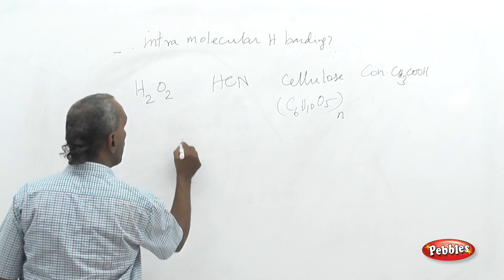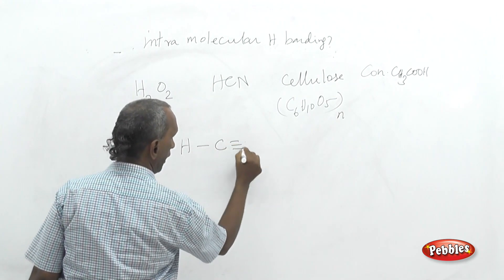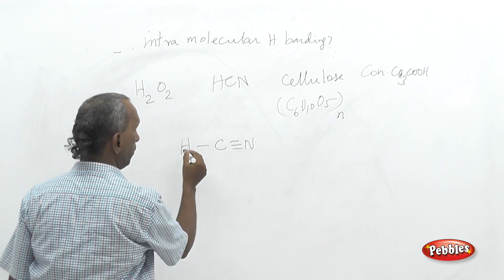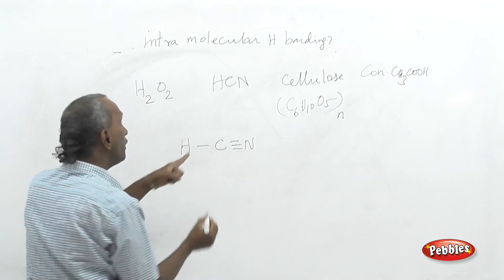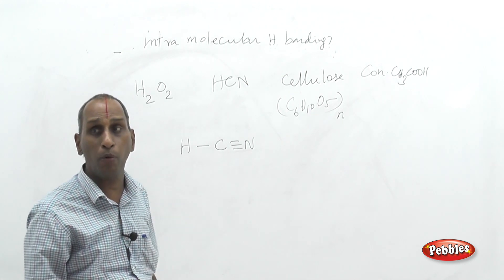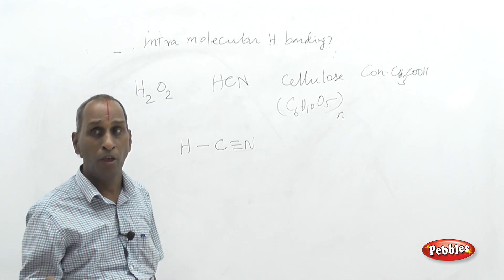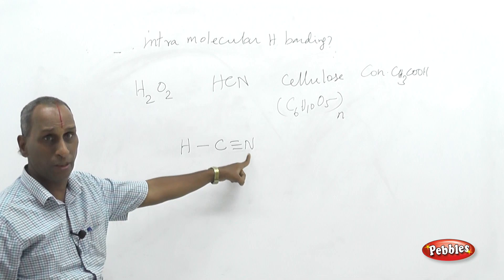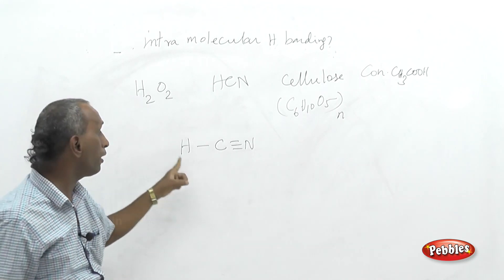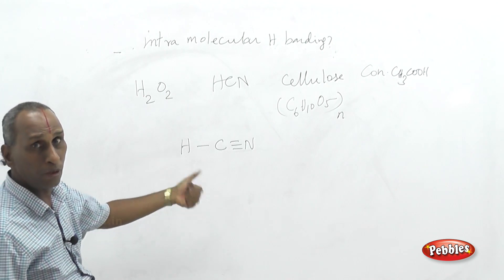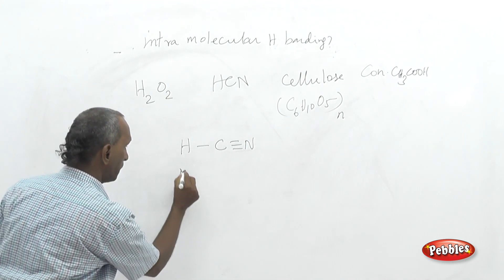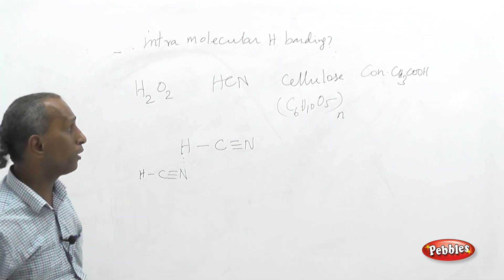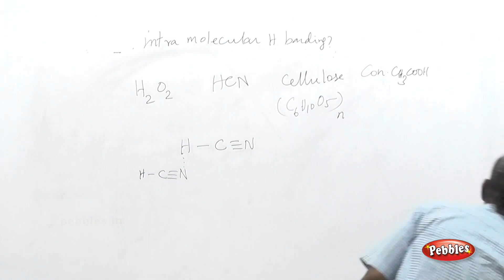Hydrogen cyanide is a linear molecule (H–C–N). Even though nitrogen is more electronegative, it cannot attract hydrogen from that distant position due to the directional nature of covalent bonding. Hydrogen bonding in HCN therefore occurs between two molecules — it is intermolecular hydrogen bonding.